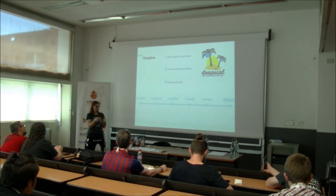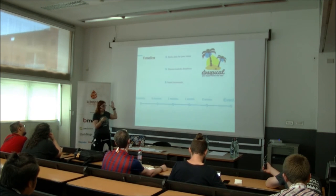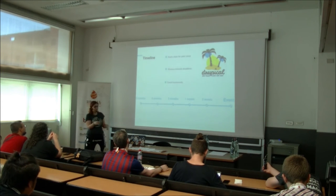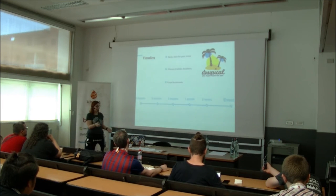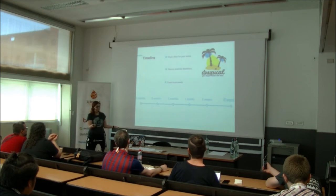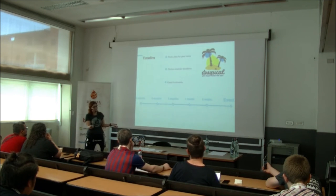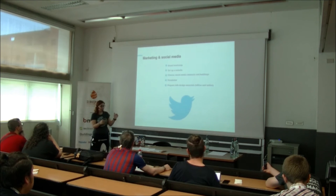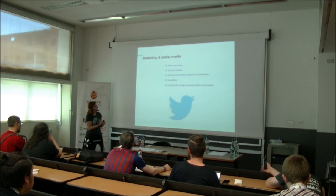When you have the date, start fixing your deadlines. I suggest counting backwards — if the event is on a certain day, define what you want to do two weeks before it, one month before, three months before. It will help you coordinate the team and give you hard deadlines. Your event already has a date and people start buying tickets, so try to stick to them.